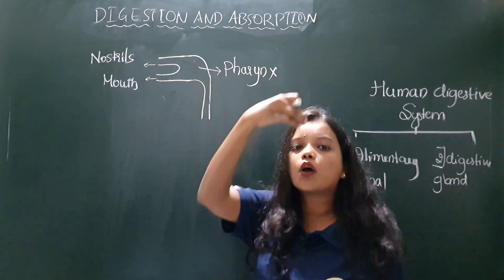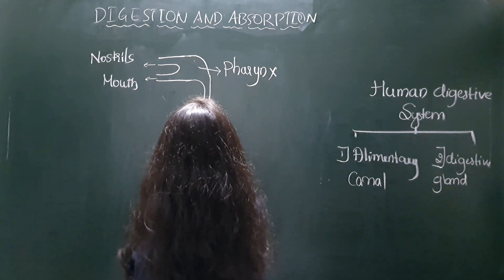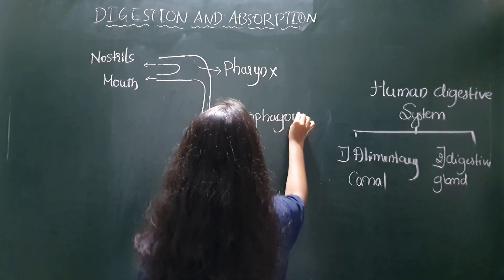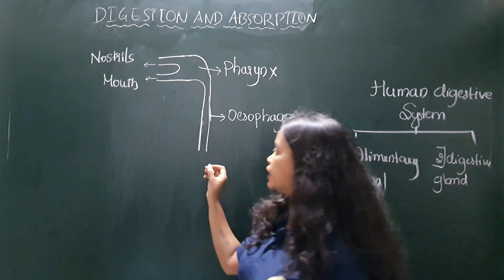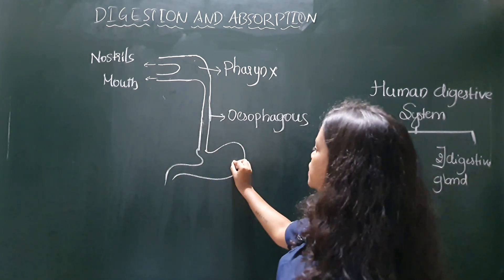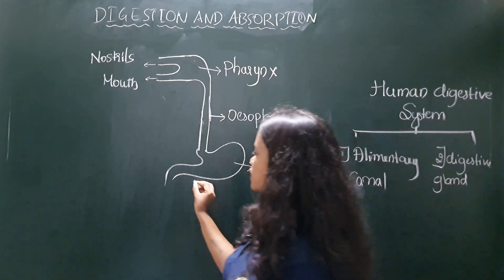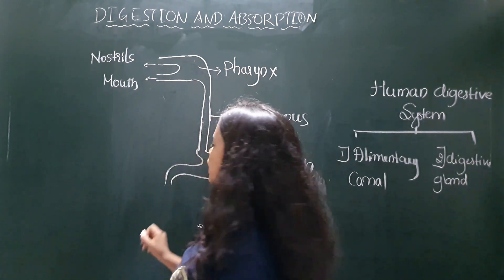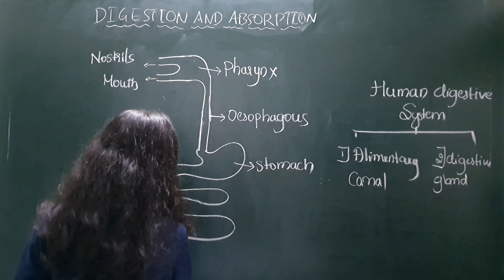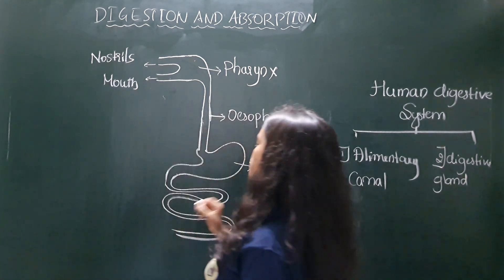From the pharynx, the alimentary canal leads to a long tubular pipe known as the esophagus. The esophagus leads to a J-shaped structure called the stomach, in which the food is stored. The ending of the stomach leads to the small intestine.